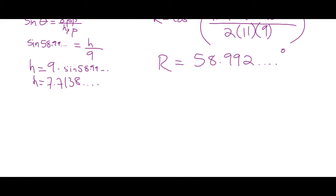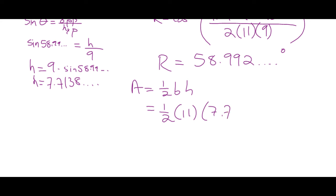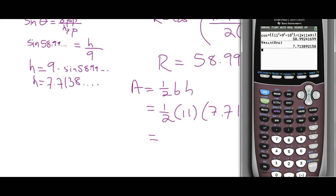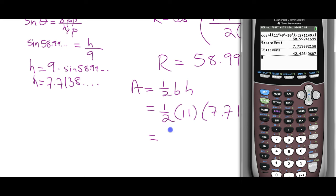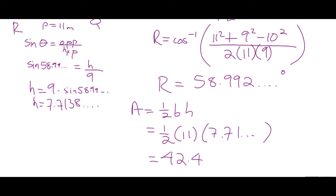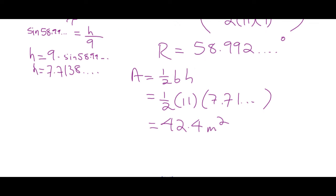Now we can find the area: area equals one half times base times height, which is 0.5 times 11 times 7.71... — using second function answer — giving 42.4 square meters. This is practical: if you're on a landscaping crew and need to find the area of a triangular patch to order topsoil, all you need is a measuring tape to get the three sides — 9, 10, and 11 meters — and you can calculate the area.